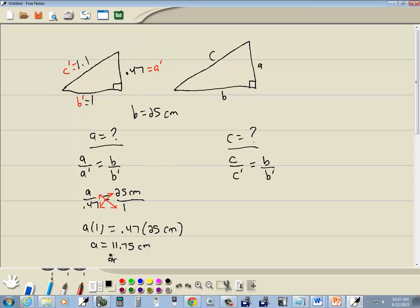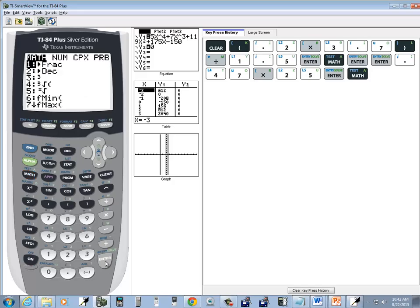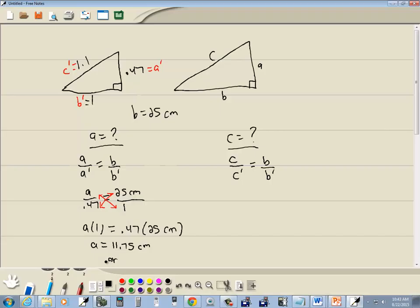Or if we want it in fraction form, 47 over 4. Either one of those would be fine for our first answer.